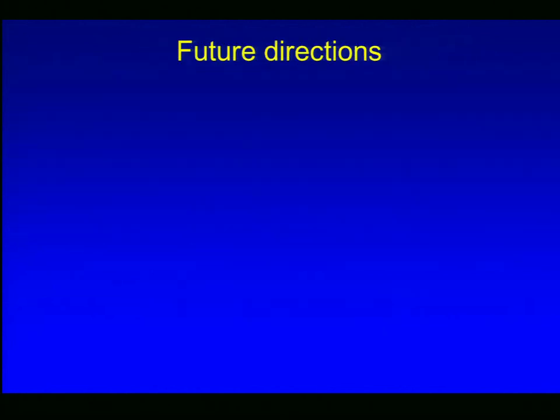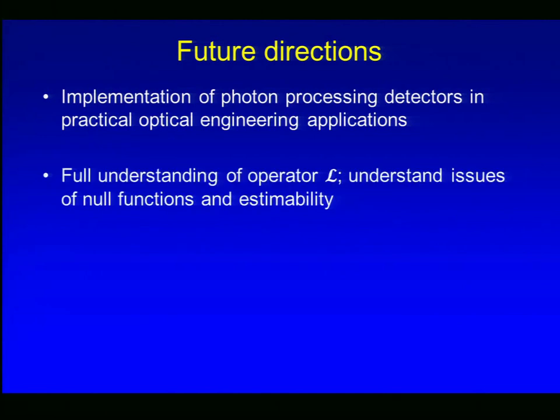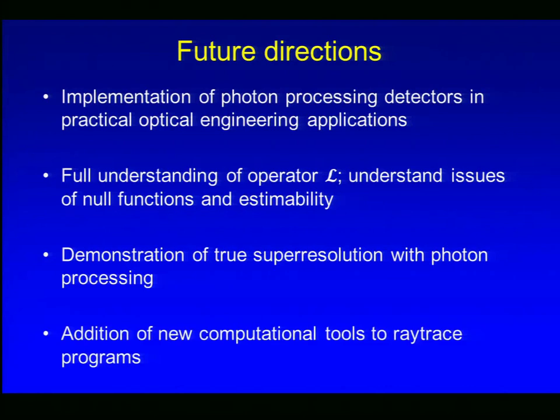Okay, future directions. Where do we go with this? I would like to see photon processing detectors implemented and used in many types of practical optical imaging systems and maybe other optical engineering applications. As a mathematician, I'm more interested in the understanding of the operator L and under what circumstances it has null functions, what the implications are for task performance. I believe that true super resolution can be achieved with photon processing, and I'm going to try hard to demonstrate that in the lab. And finally, I would like to see the engineering community incorporate some of these ideas into ray trace programs, which I think of as radiance transport code. Thank you very much.